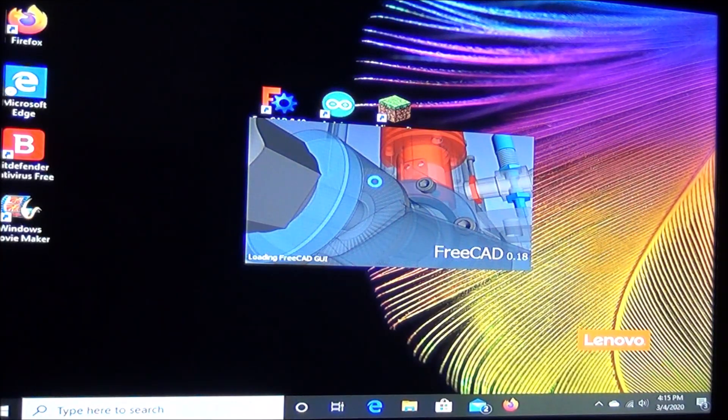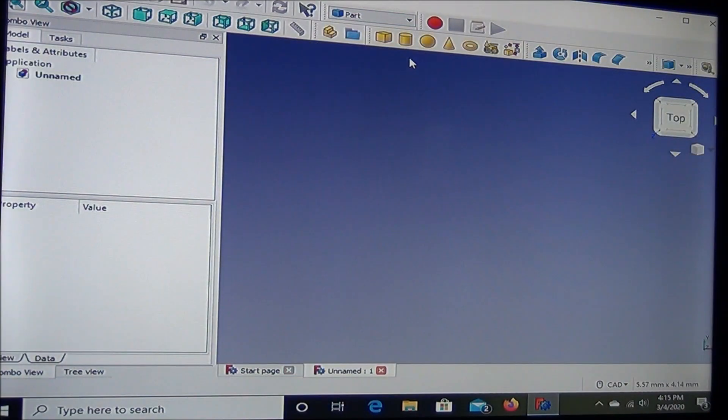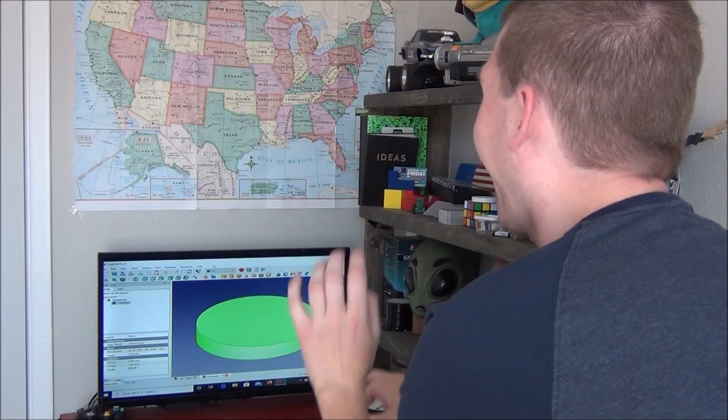To get started, I opened up my FreeCad software like I always do. And I don't want to bore you guys, so I'll skip over most of this. But I just got busy designing all of the parts I would need. And now with all of our parts designed, we can go ahead and drop them into the printer and get to printing.